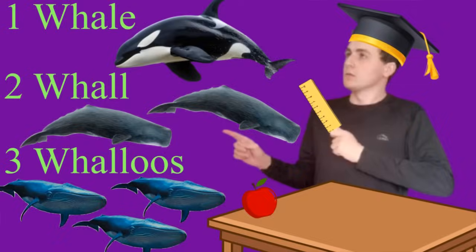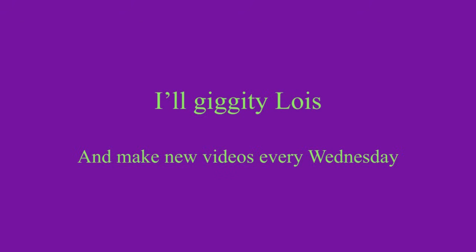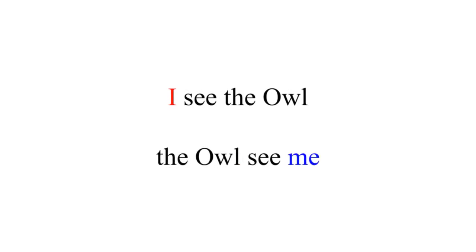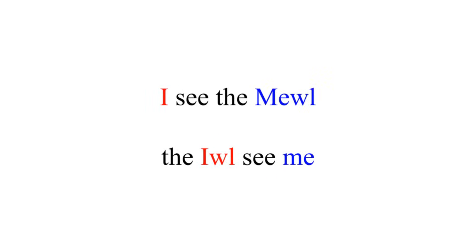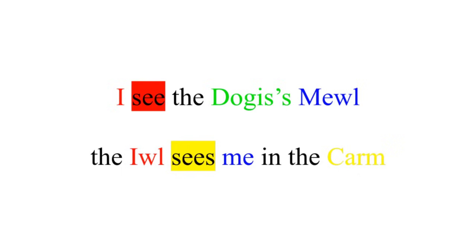Xeniof's here to school you, so bow to your sensei. I'll make new videos every Wednesday. You know how in English you can say, 'I see the owl,' but 'the owl sees me'? Imagine if it was like that for every noun, and there were way more different forms. That's just declensions. We haven't even touched on verbs.